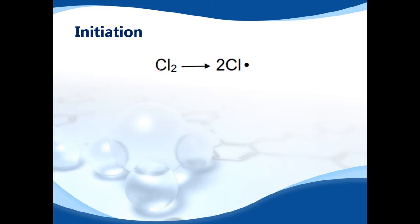Here we have a chlorine molecule, and that chlorine molecule is broken apart in the presence of UV light, ultraviolet light, and it produces two chlorine radicals.